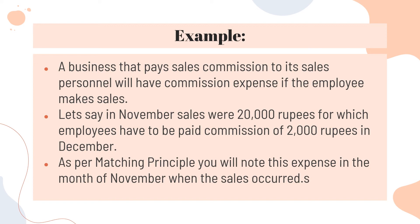Let's take another example. Let's say you sell books. You purchased 10 books at 1,000 each, so 10,000 in total. But this month you only sold three books — meaning you sold 3,000 worth of books. That is your cost of goods sold. But this month you paid for all 10 books. If you record the full 10,000, it will seem like you only made a loss this month — but is that reality? No, because you still have seven books remaining which you will sell later. Those seven books are your inventory. That's why we calculate cost of goods sold — how much did we spend on what we actually sold, and how much did we earn from it.